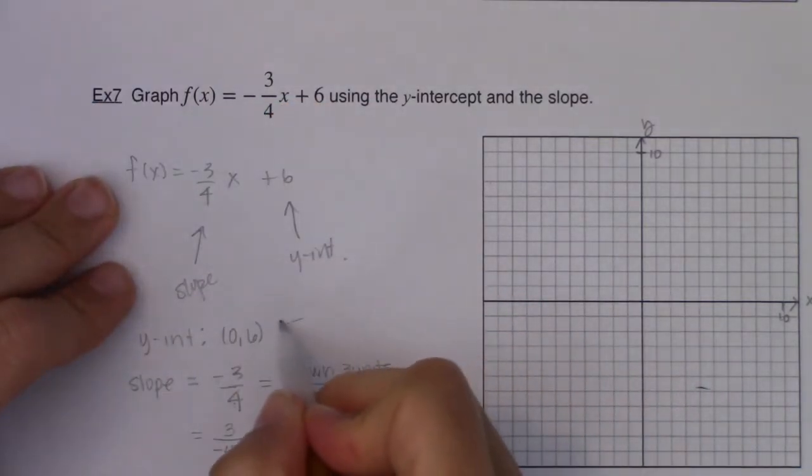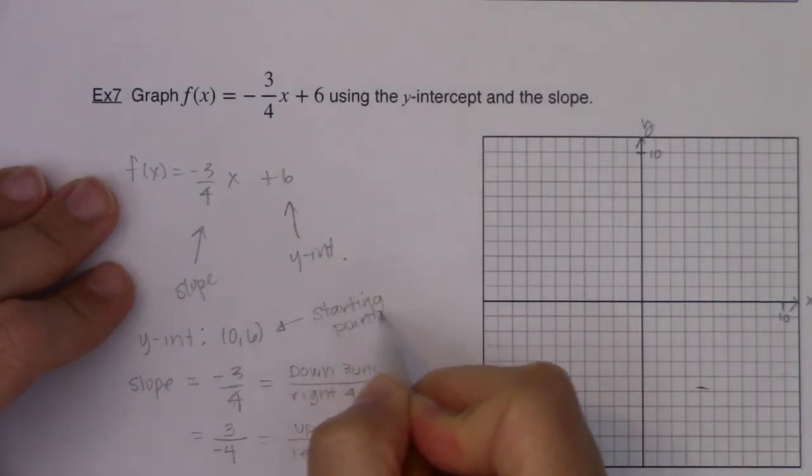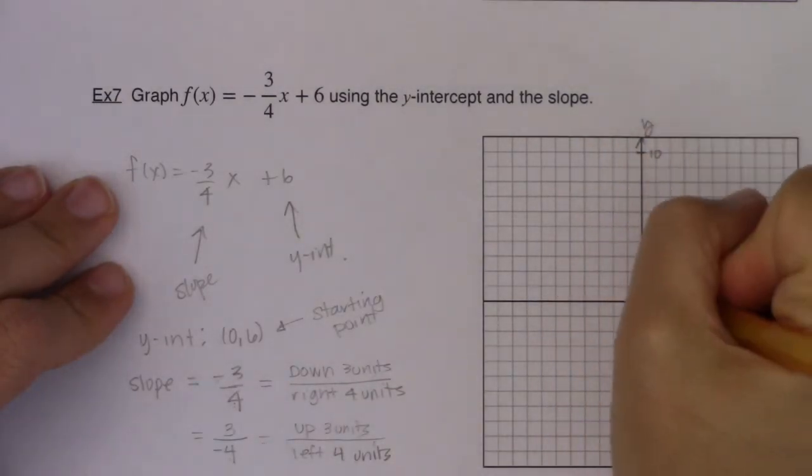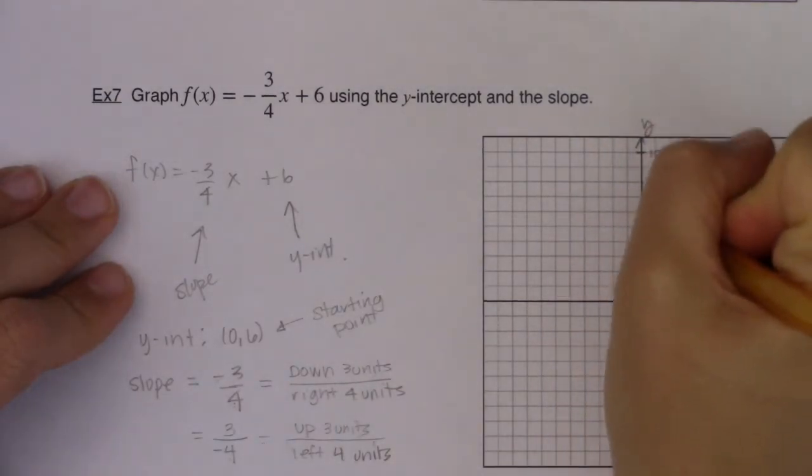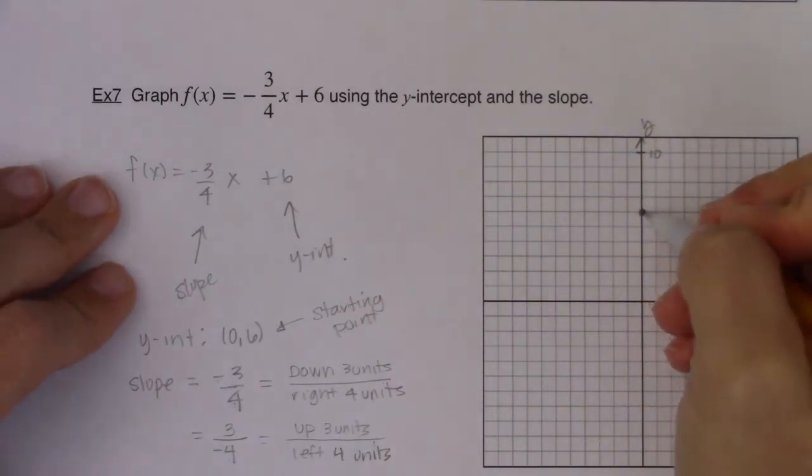Your y-intercept, this is always your starting point. And then your slope is going to tell you how to move. So let's go to our starting point, one, two, three, four, five, six. Starting point. You can move in one of two ways.